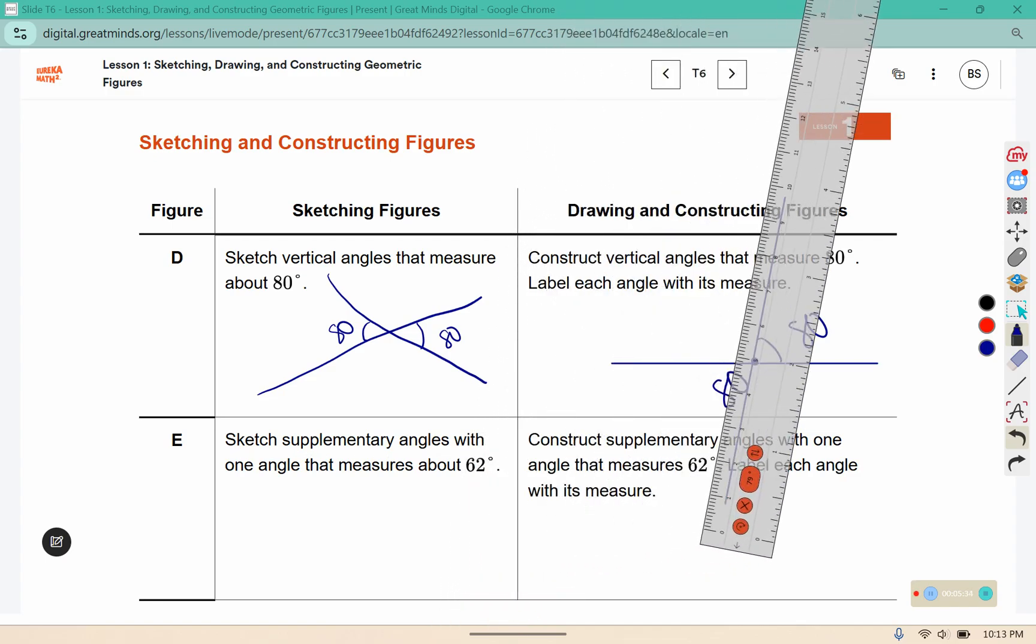Supplementary angles with one angle that measures 62. Supplementary means they add up to 180 degrees. 62 is less than 90, so it should be an acute angle here.